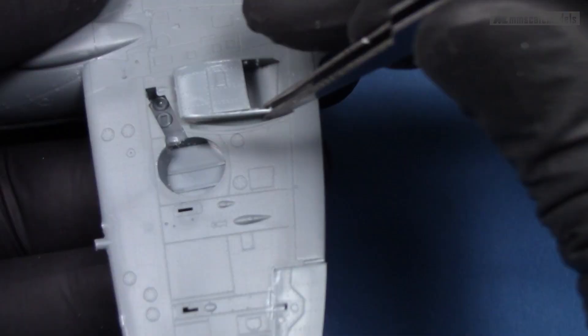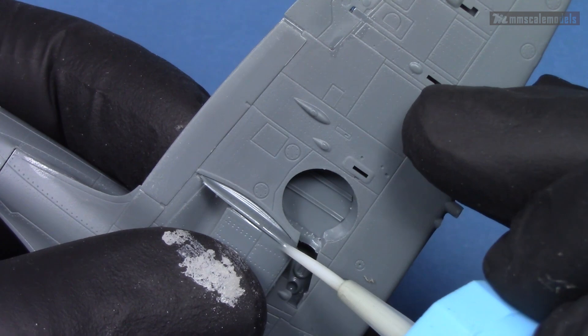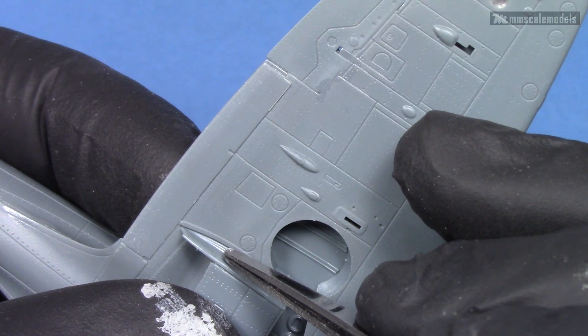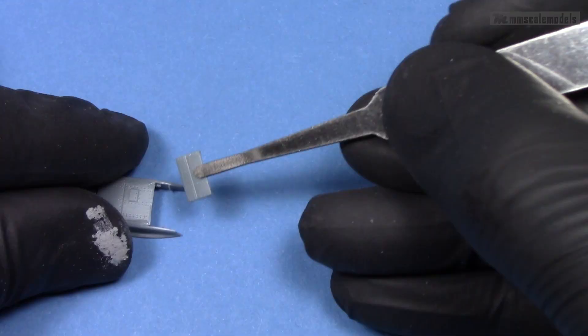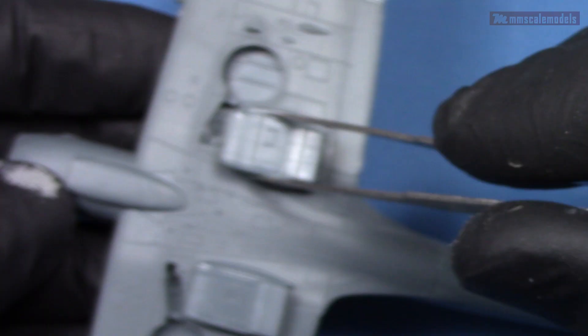For the underwing coolers assembly I used their slots in the wings as jigs as they are made of too many parts and I was concerned about the proper alignment. I however did not glue them in place as I wanted to have a good access for painting later on. The kit gives the freedom to position the cooler doors as we like so I opted for the wide open setting.